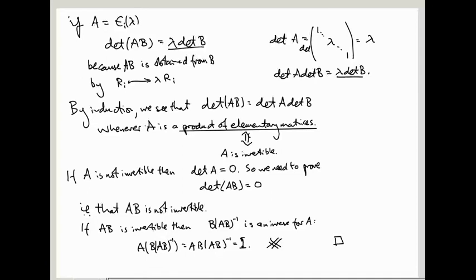You may not yet appreciate why this formula is so great, but I really like it, and I'm sure you will come to like it more and more as you do more maths. The point is that the determinant is given by an incredibly complicated formula — a sum over permutations of products with random signs everywhere — and yet it behaves so nicely with respect to matrix multiplication. It's kind of incredible.